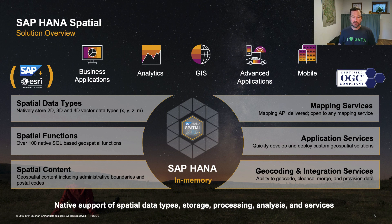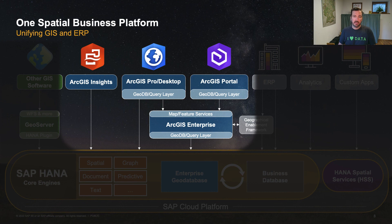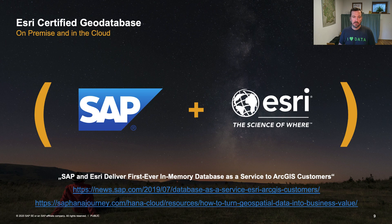SAP HANA is also an ESRI certified geodatabase. This means you can run ESRI software such as ArcGIS Pro, ArcGIS Portal, or ArcGIS Insights on top of SAP HANA, and SAP HANA can be used to establish an enterprise geodatabase via the ESRI software. SAP HANA is certified both on-premise and in the cloud — whether HANA as a Service or the new HANA Cloud — for usage with ESRI software.